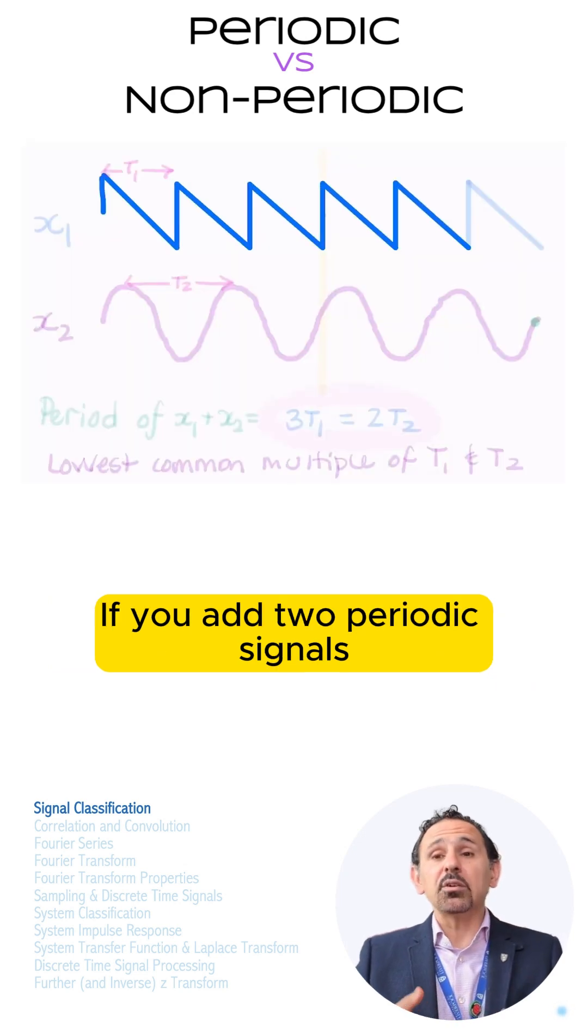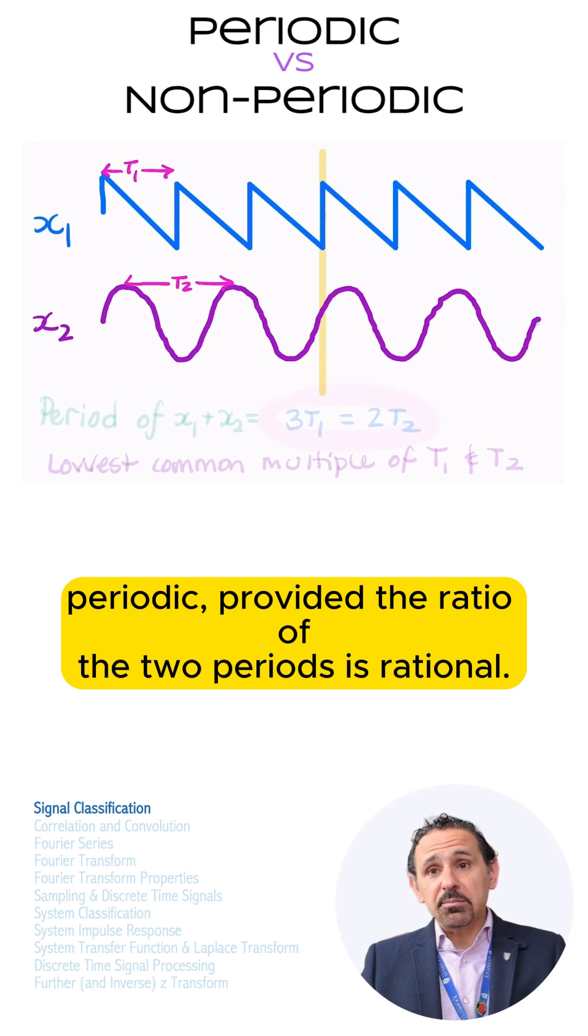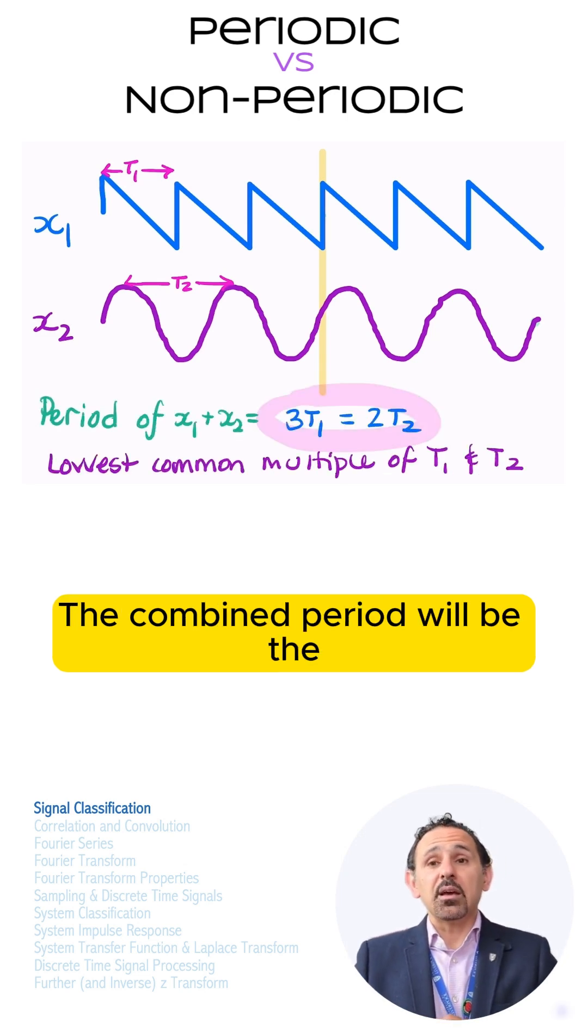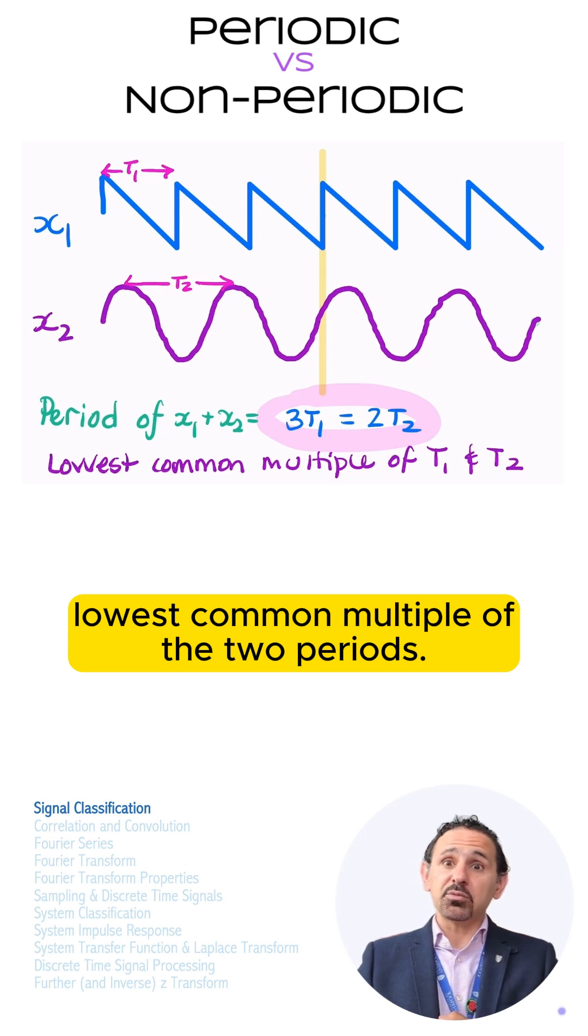If you add two periodic signals together, the sum is also periodic, provided the ratio of the two periods is rational. The combined period will be the lowest common multiple of the two periods.